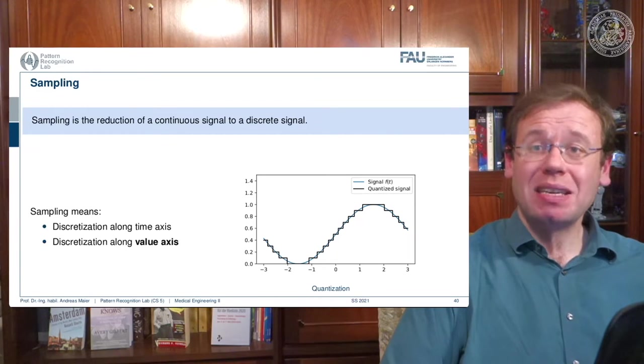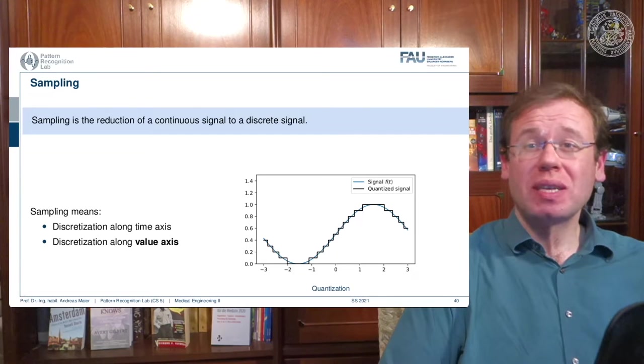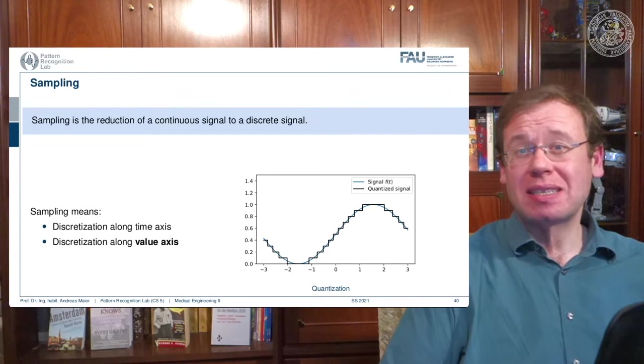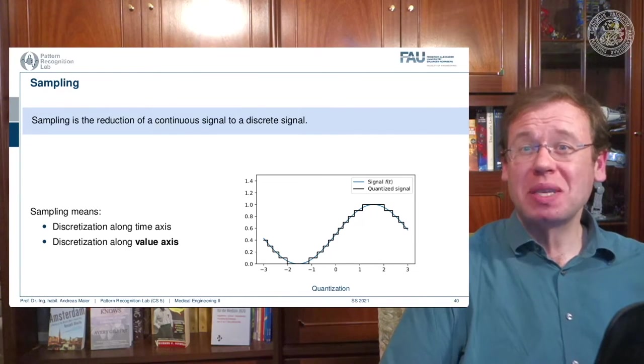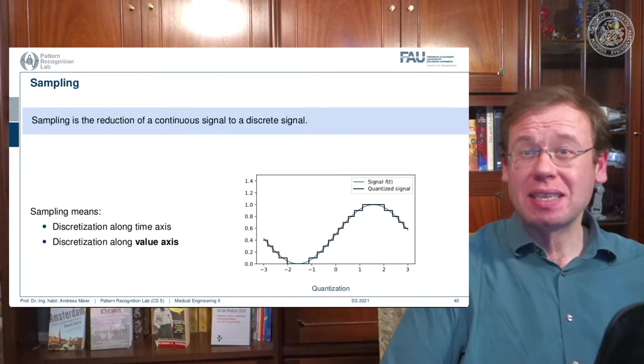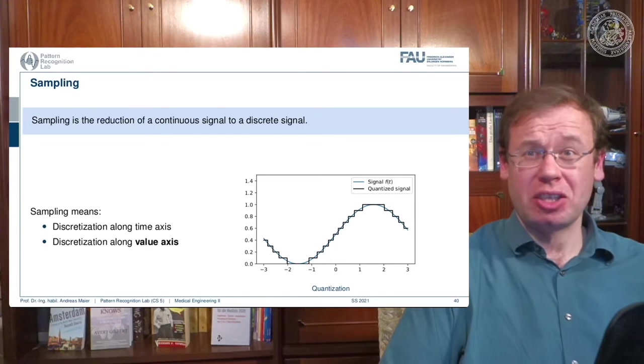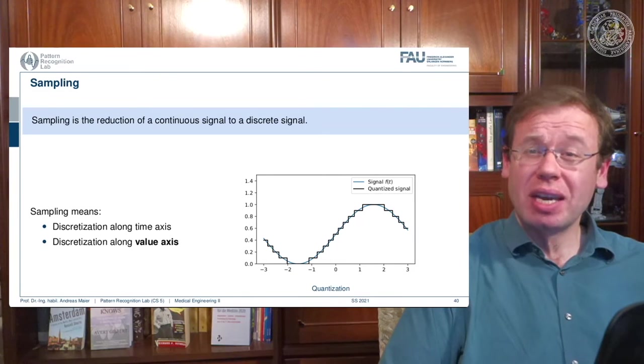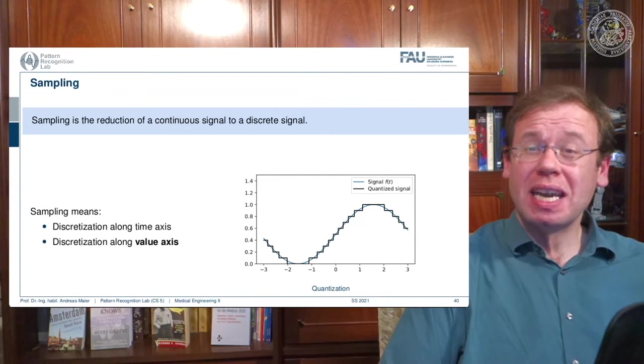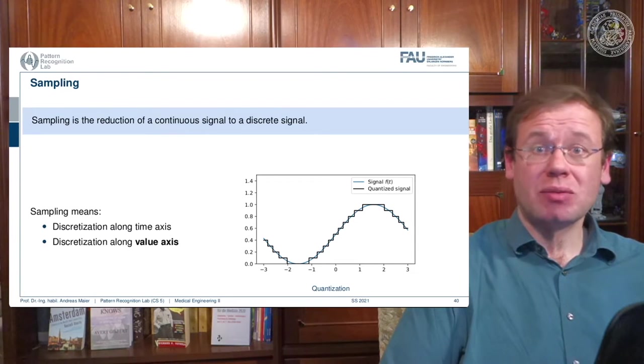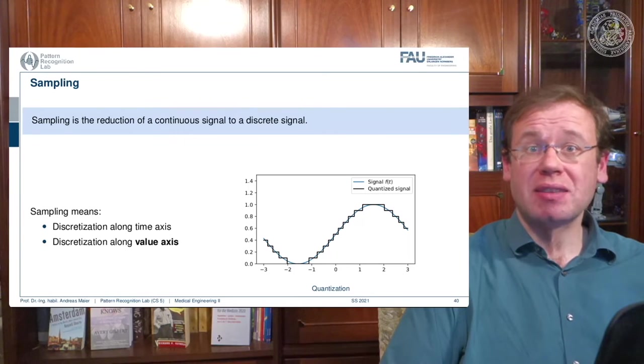And the key problem that we're actually facing is how do we select the parameters essentially the step size in between the samples and the step size in between the value, such that we don't lose any information. And on the other hand, we also want to be able to use as little space as required. So we don't want to have excessively many of the sampling steps.